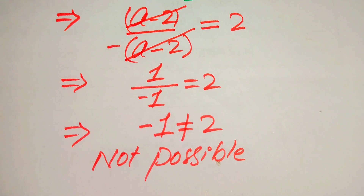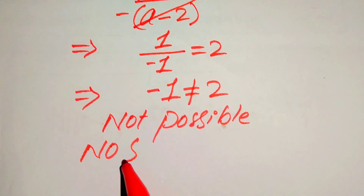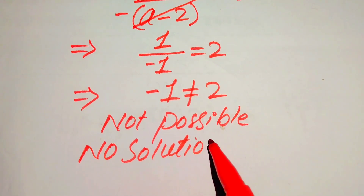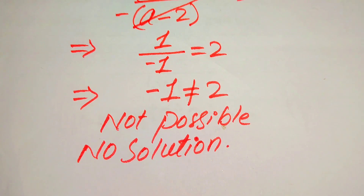So in the second method we also cannot find any value of a, and we again conclude that this question has no solution. The roots which satisfy the given question statement are called the solution of the equation, and the roots which cannot satisfy the given question statement are called extraneous roots. This is our final answer. Thank you so much for watching this video — please subscribe to my channel for more exciting videos.